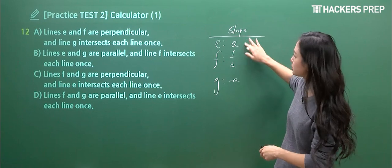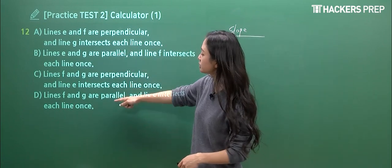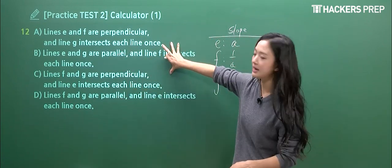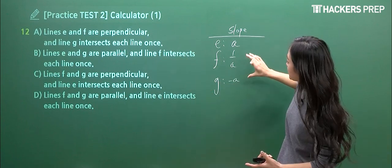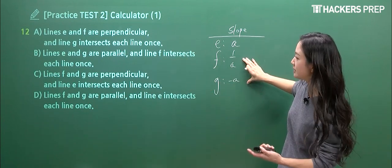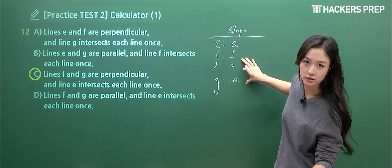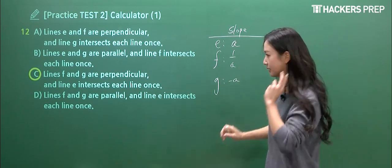And you can see that none of these slopes actually match, so parallel actually does not make sense. So you have to choose from either A or C. And the perpendicular relationship is going to hold for lines F and G. And there's only one match. That's why the correct answer is C.